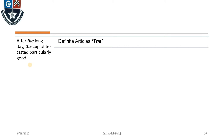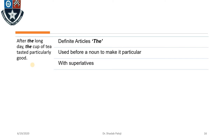We call it definite because it is specifying something which is definite. 'The' helps us understand that we are talking about that one particular thing, one person, one object which we specifically want to mention. It is used before a noun to make it particular — that is how we can make anything special or particular when we use 'the.' So 'the doctor,' 'the apple,' 'the school' — that noun becomes a particular noun.